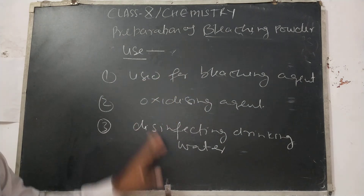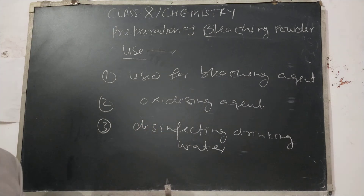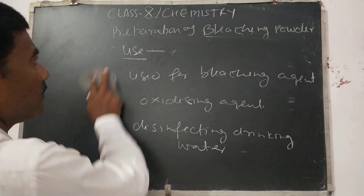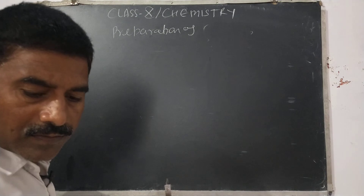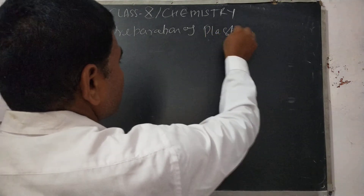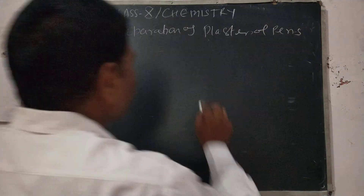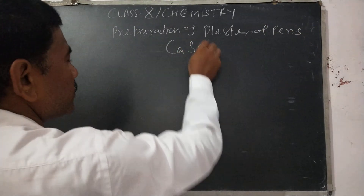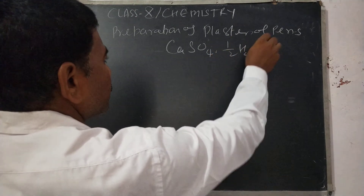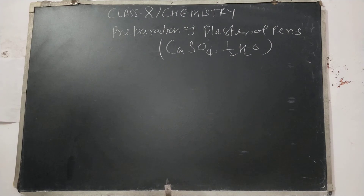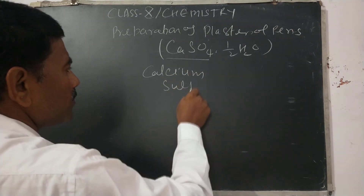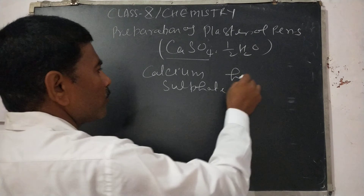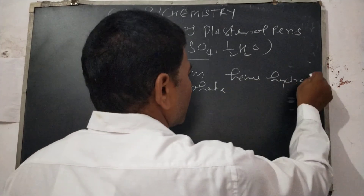Our next salt is Plaster of Paris. The chemical formula of Plaster of Paris is CaSO₄·½H₂O. Its chemical name is calcium sulphate hemi-hydrate.